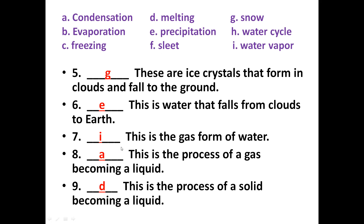Answer number seven: this is the gas form of water — we know this is water vapor. Answer for number eight: this is the process of a gas becoming a liquid. Water vapor in its gaseous form rises into the air and condenses — the gas state of water condenses to liquid — and this is called condensation.